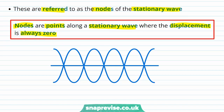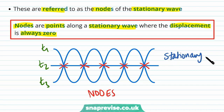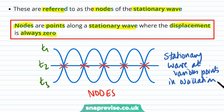Considering our stationary wave at three different times — t1, t2, and t3 — we can see how the displacement of each point changes. However, certain points remain at zero displacement at all three times. These are the nodes of the stationary wave. The displacement at these points is always zero — that is how we define our nodes.